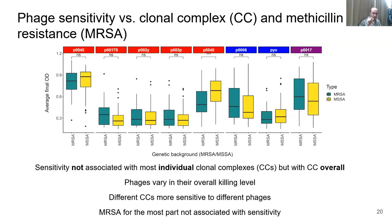I then did two high-level associations: one with clonal complex, because clonal complex tends to correlate with restriction specificity which affects phage infection, and then methicillin resistance, which could affect phage resistance because methicillin-resistant strains can have more defects in wall teichoic acid biosynthesis. For methicillin-resistant versus sensitive strains, there aren't significant differences with the exception of one phage. Sensitivity is not associated with individual clonal complexes, but it is with CC overall, supporting the restriction specificity hypothesis. Methicillin resistance is largely not associated with sensitivity.